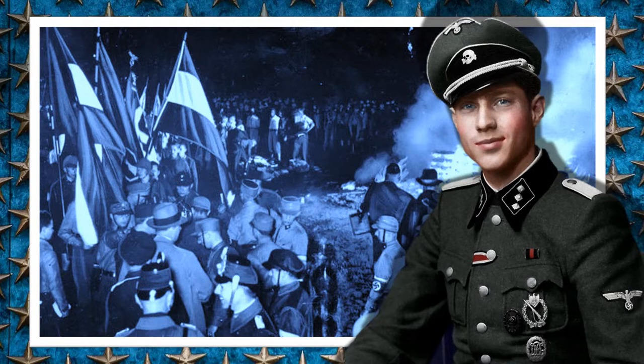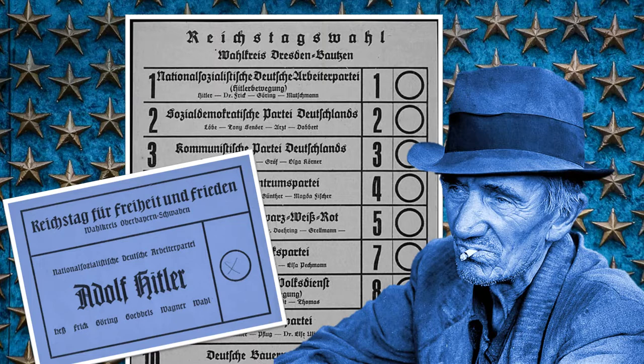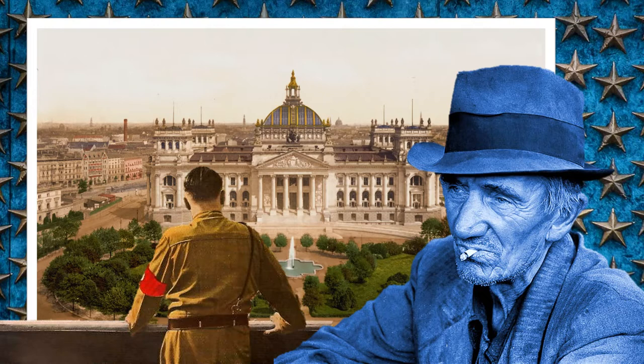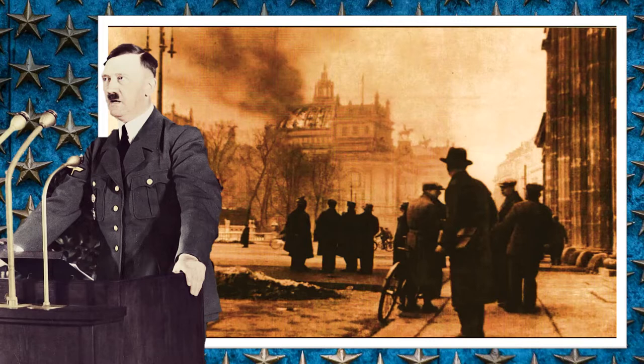Nazis were not afraid to use violence to intimidate the opposition; they even had a paramilitary wing called the SA, or storm division. With German unemployment reaching devastating proportions, membership in both the Nazi and the German Communist Party soared as voters looked for radical solutions. In the 1933 elections, the Nazi Party won more seats than any other party, and a conservative coalition appointed Hitler as Chancellor, the head of the German government.